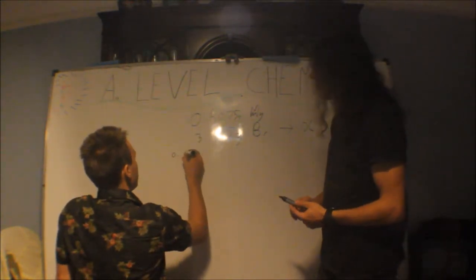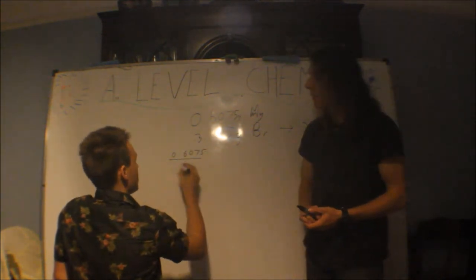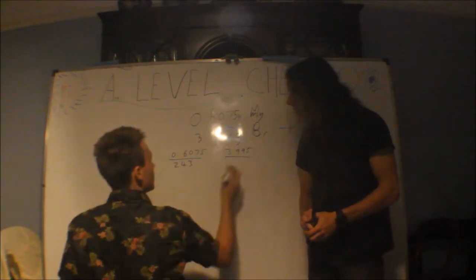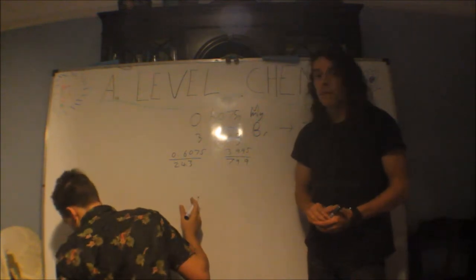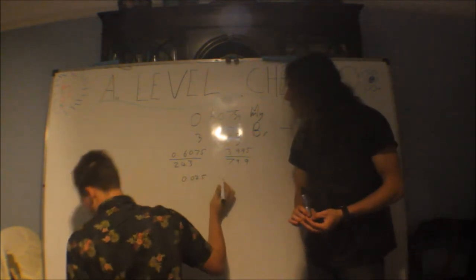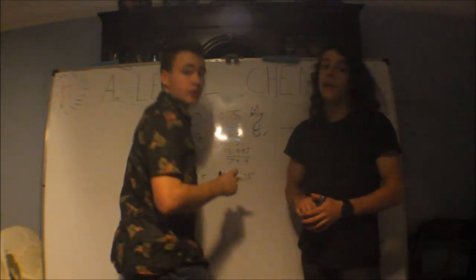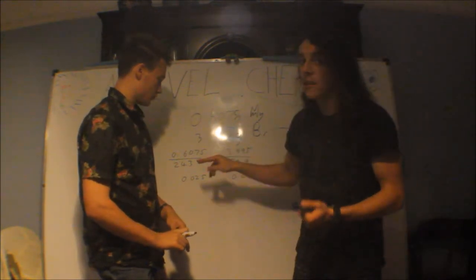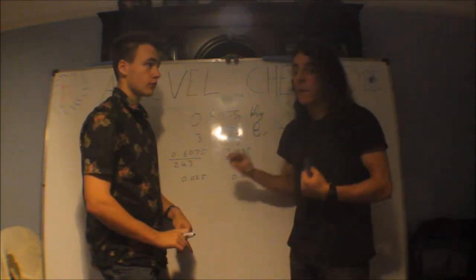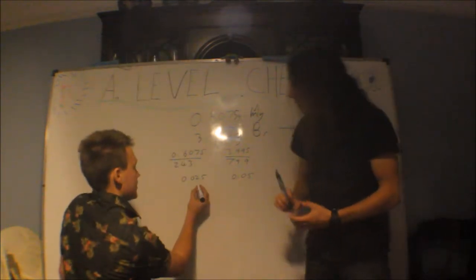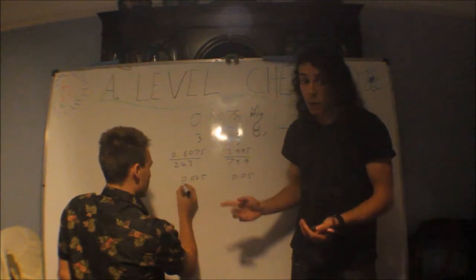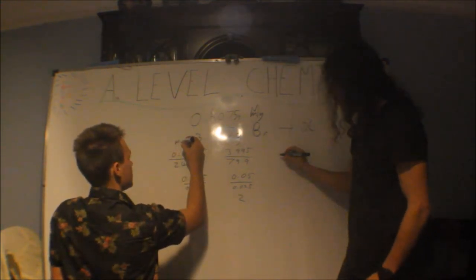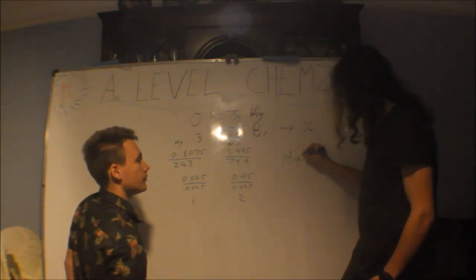So we do this separately. You need 0.6075 — the mass of magnesium — over the MR, which is 24.3. And you've got 3.995 divided by 79.9. This puts it into moles. This answer happens to be 0.025, and then 0.05. You know this is a ratio — the eventual ratio between the magnesium and bromine in an empirical formula. You can see quite easily this is going to be 2 bromine to 1 magnesium. Sometimes they're more complicated numbers, so you divide by the smallest number of the two. In this case 0.025 is smallest, so it becomes 1, and 0.05 divided by that is 2. So the empirical formula is MgBr2.